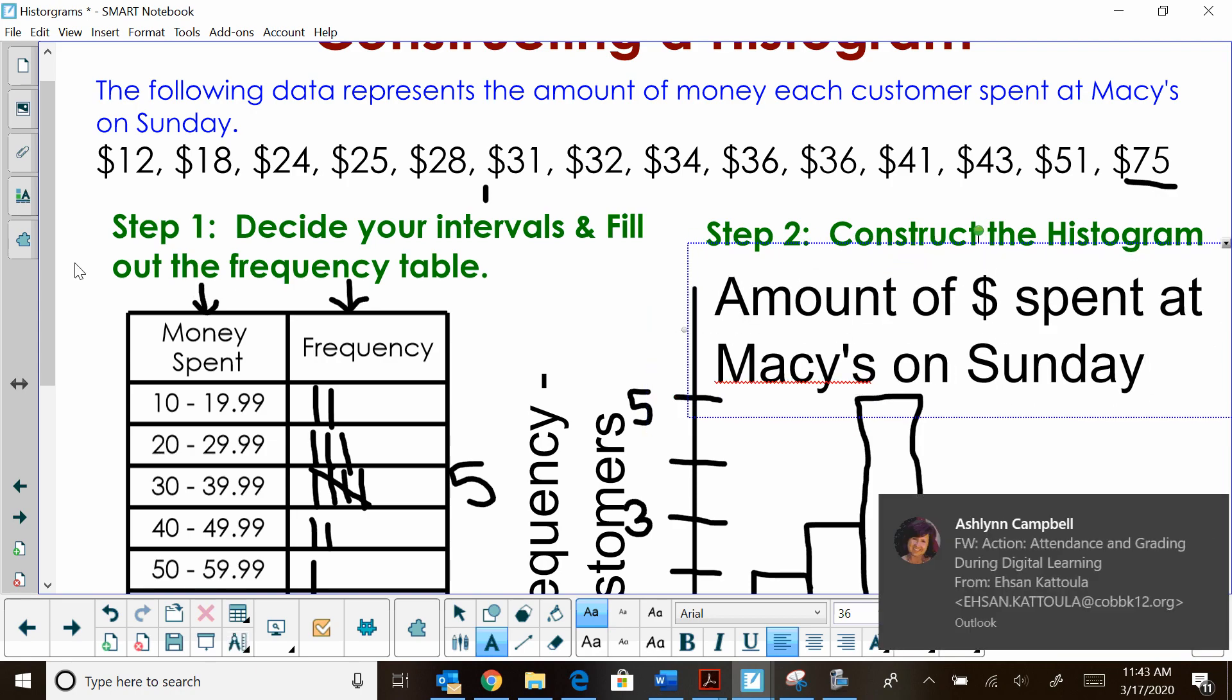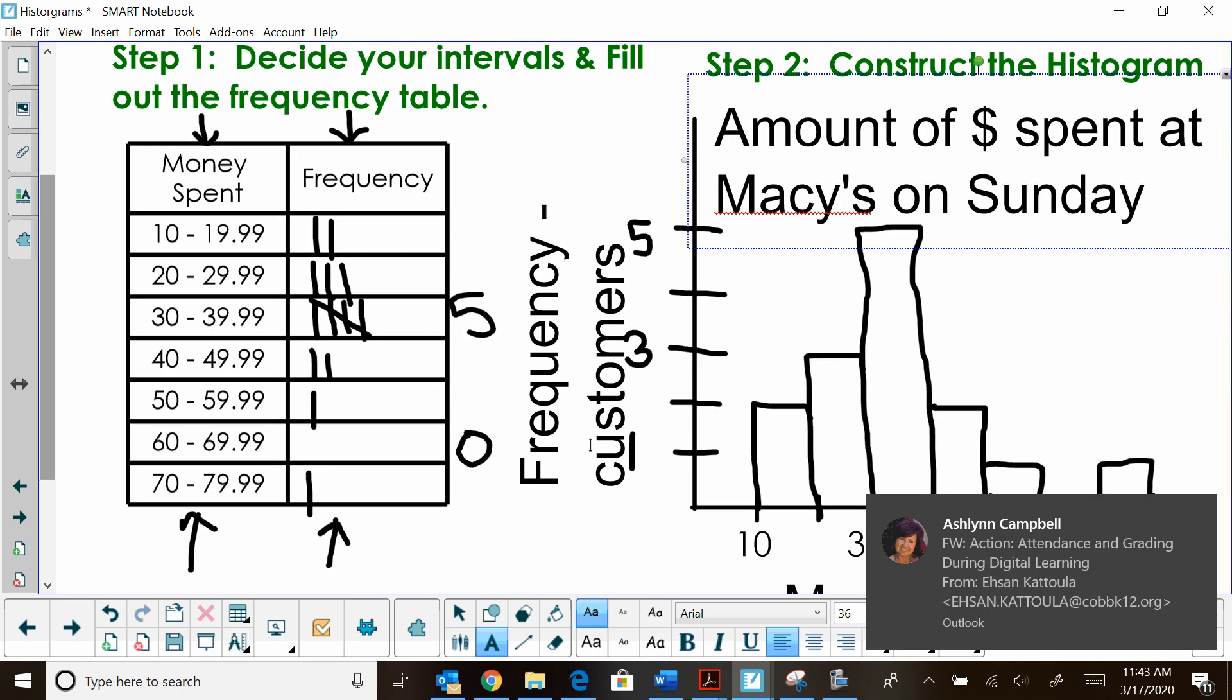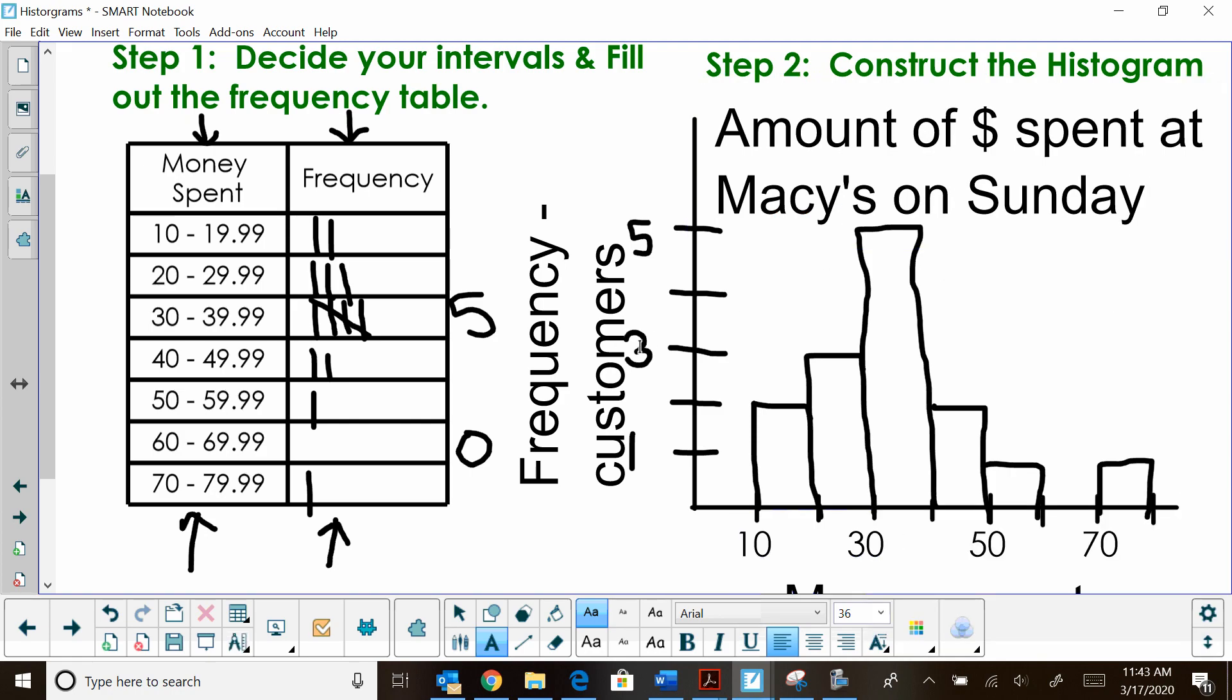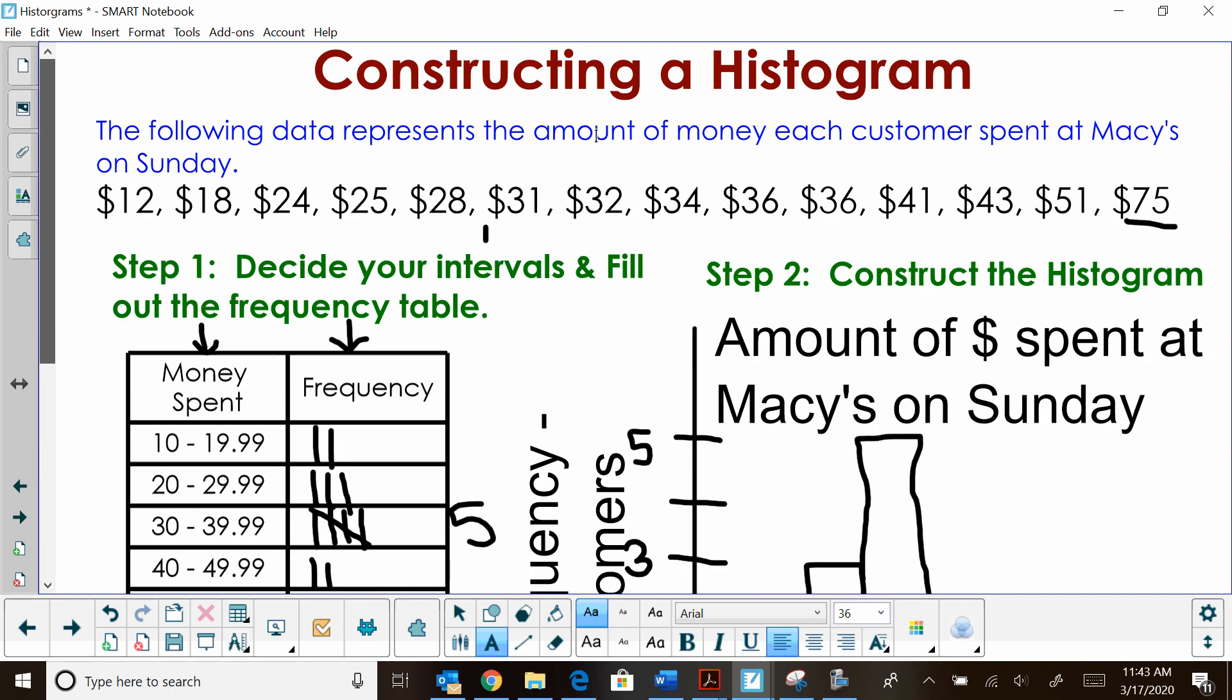You actually have 5 labels here. You have an x-axis with numbers and a title. A y-axis with numbers and a title. And then a whole title for your graph. And you want to make it neat and organized. And that's how you create a histogram. I hope this video has been helpful.